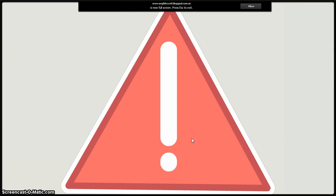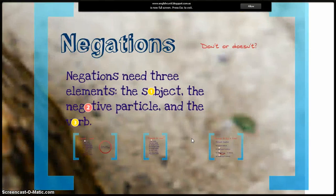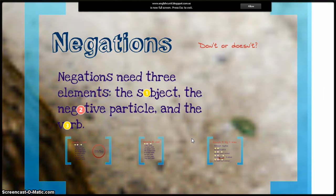Remember that changes happen with he, she, it. Els canvis, quan és tercera persona del singular. Ell, ella, allò. O qualsevol paraula que es pugui substituir per ell, ella i allò. En el següent vídeo, les negacions. De moment, una pausa per assimilar-ho.